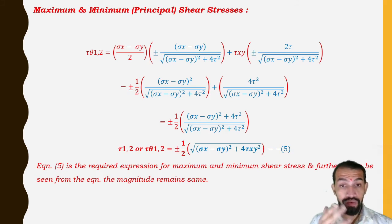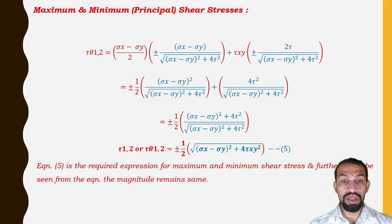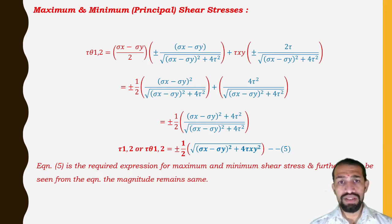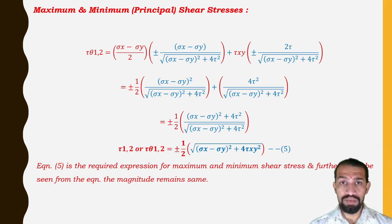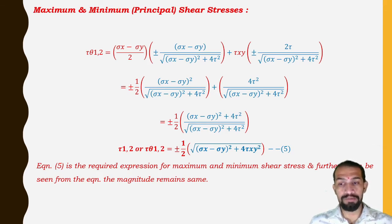The negative or minimum value indicates it acts at right angles to the positive value, and the two are complementary shear stresses. The principal plane for maximum shear stress is given by tan 2θ = (σ_x − σ_y) / (2τ). The maximum principal stress is (1/2)(σ_x + σ_y) ± (1/2)√[(σ_x − σ_y)² + 4τ²], where the plus gives maximum and minus gives minimum.